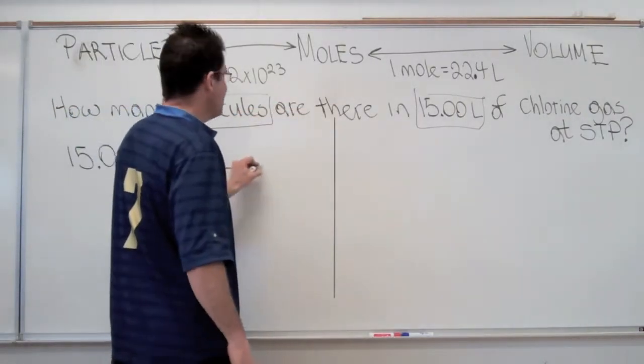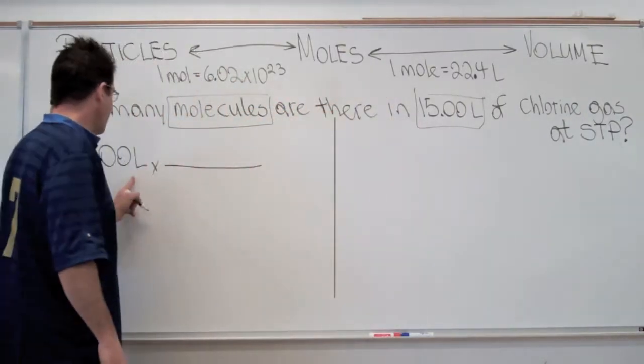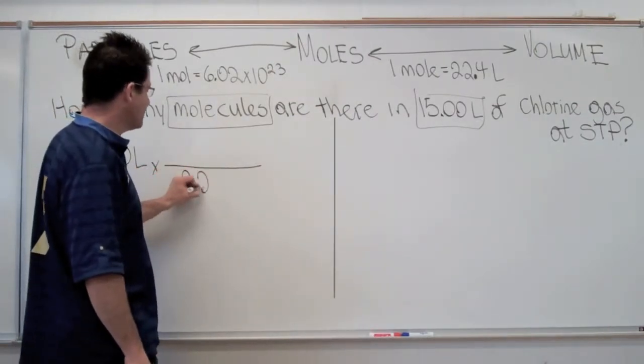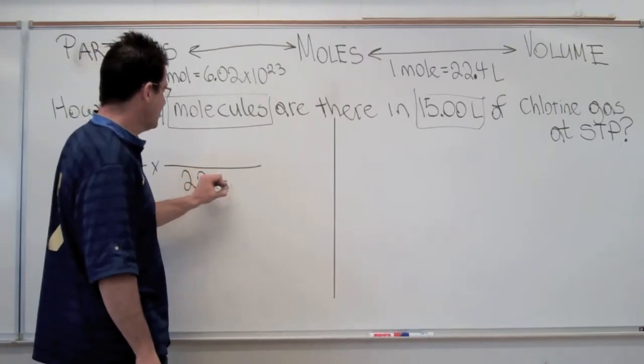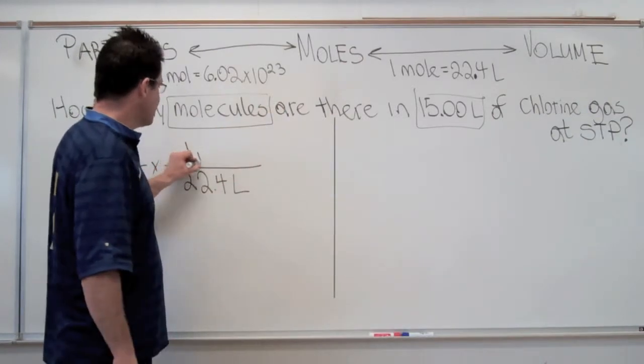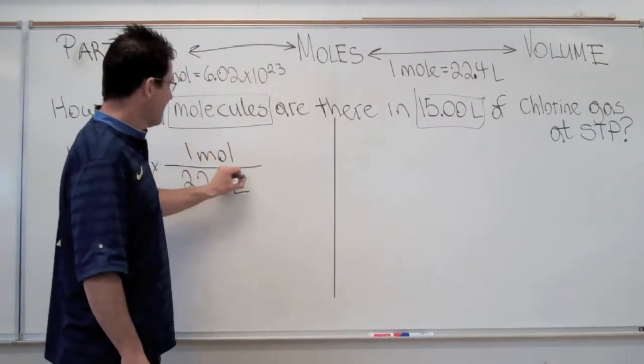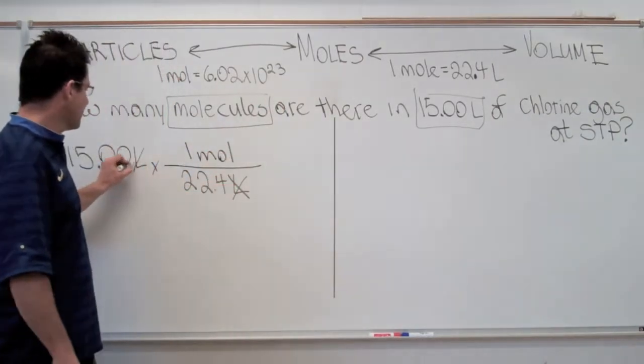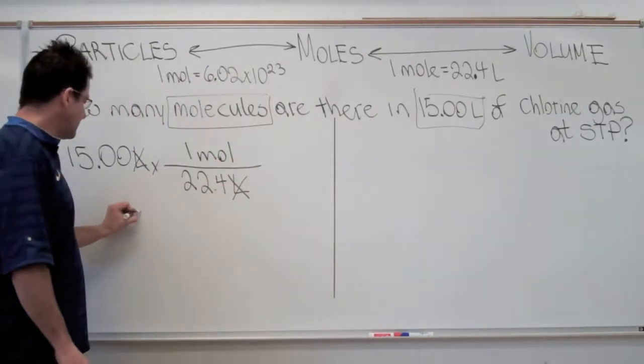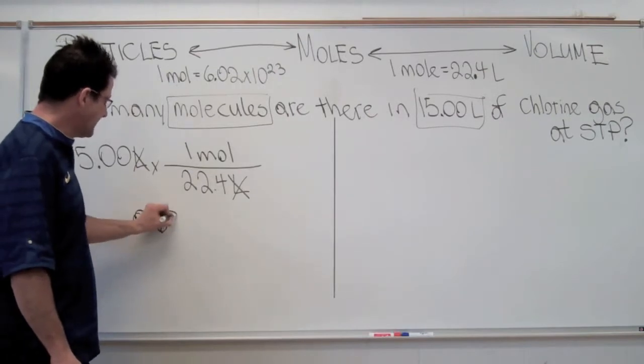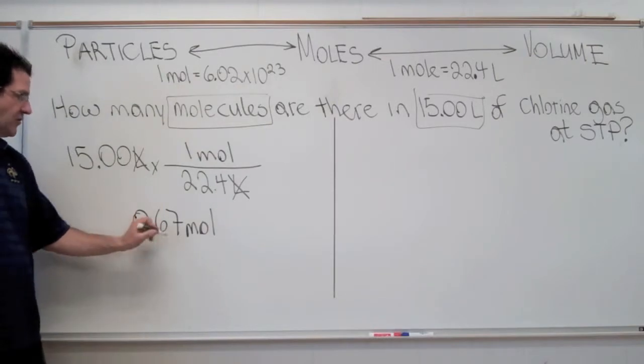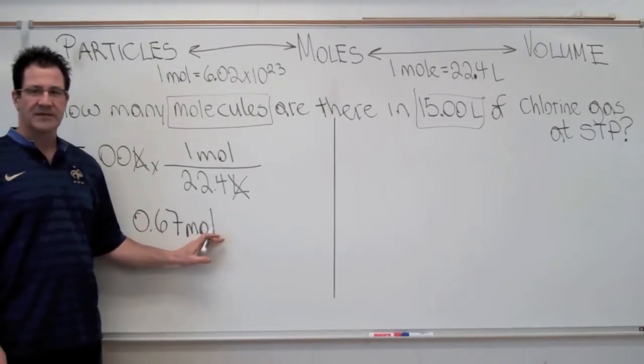Here's our conversion factor that we're going to use. We have liters in the top, we have our value in liters. We want to be able to get rid of liters and cancel the liters, so we put 22.4 liters in the bottom and one mole goes on the top. Cancel liters, we're left with moles. In this case, we come up with 0.67 moles. So the answer to the first part of this conversion is 0.67 moles.